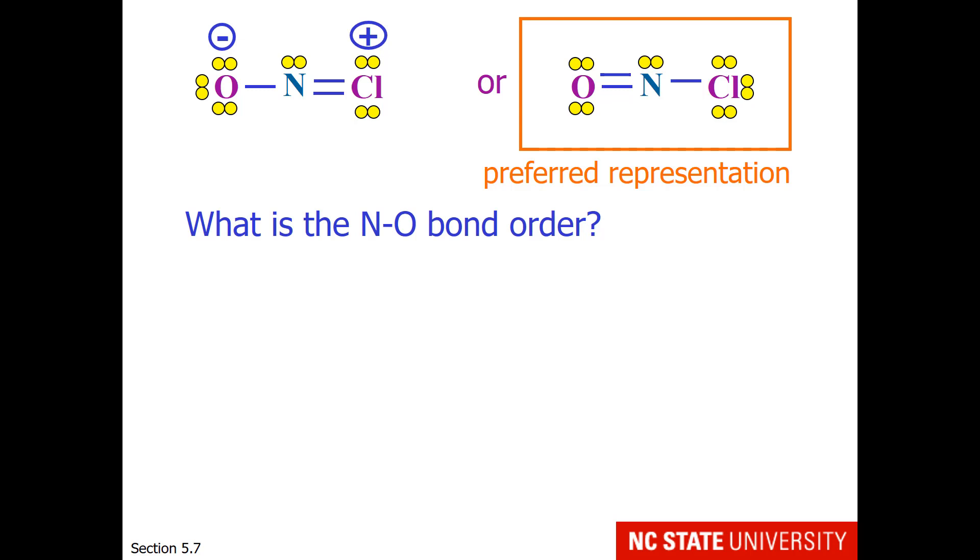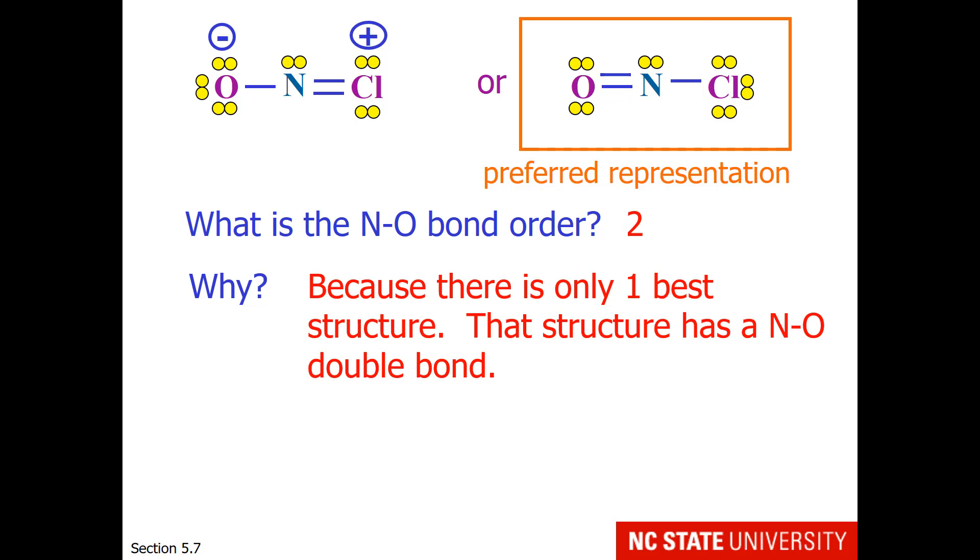So when one looks at the nitrogen-oxygen bond order, there is a double bond there. So the double bond is 2. Why is that? Because there is only one best structure. That structure has an NO double bond. So when you have one best structure, use your eyeball and look at it to see what is the bond order for that one fixed structure.